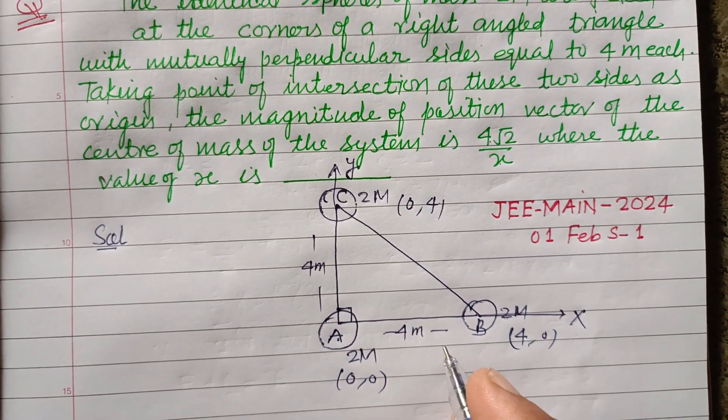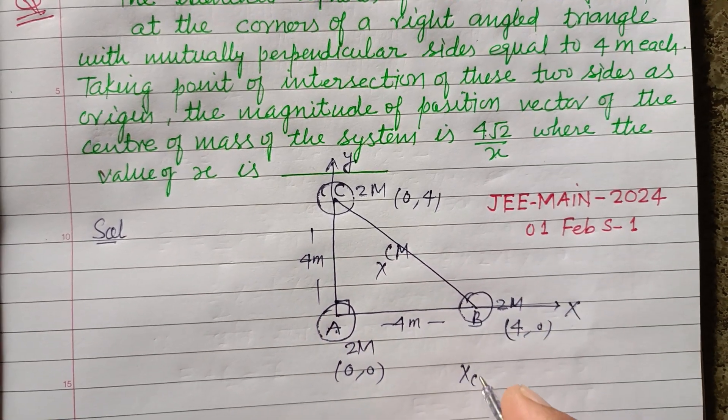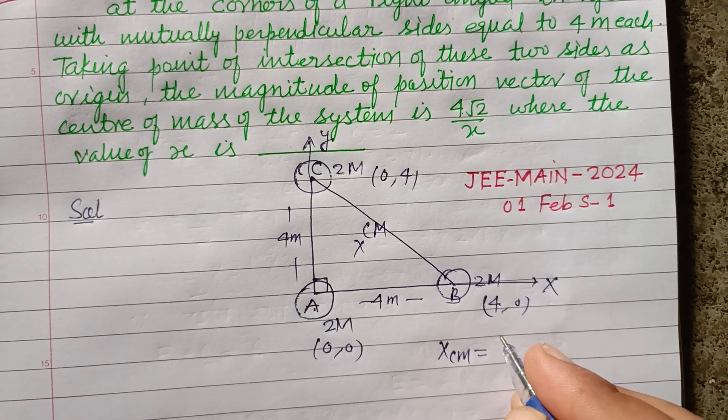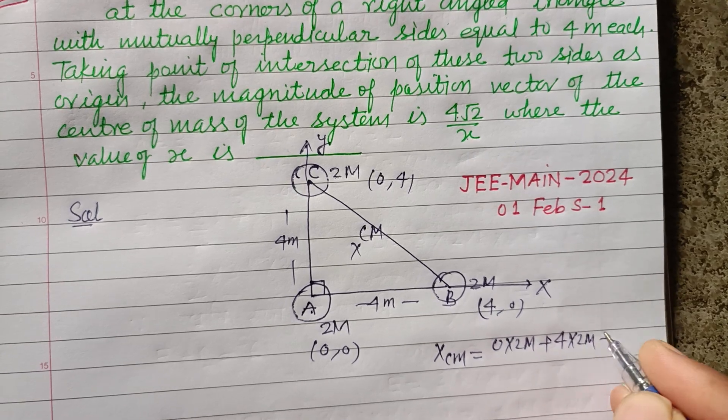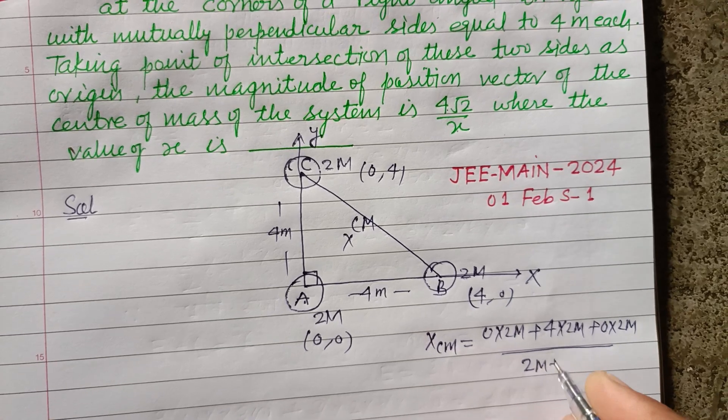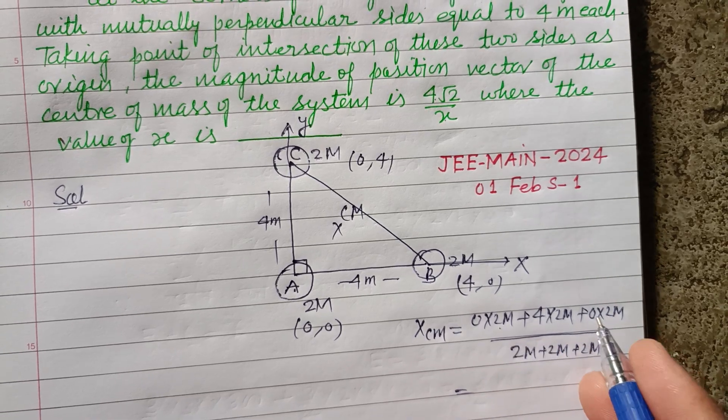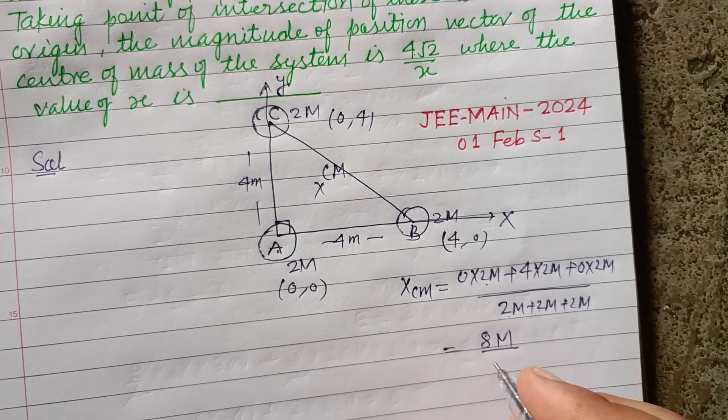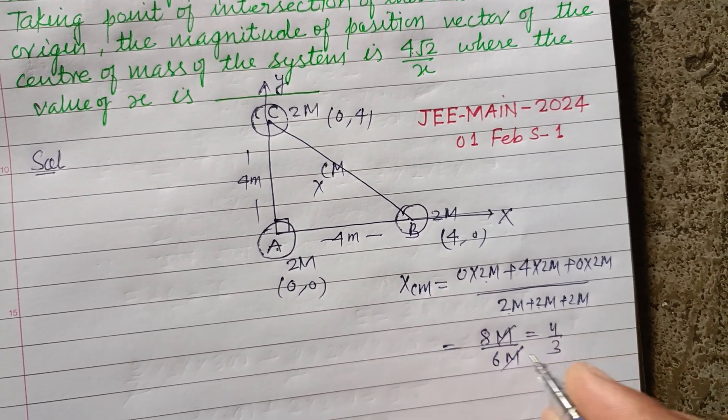So for center of mass, let this be CM. Its x-coordinate of center of mass is: x_CM = (0×2m + 4×2m + 0×2m)/(2m + 2m + 2m). So this will be 8m/6m, which equals 4/3.